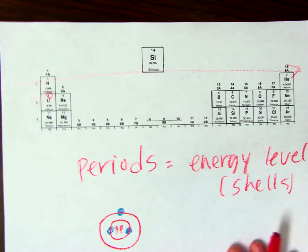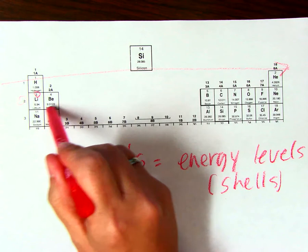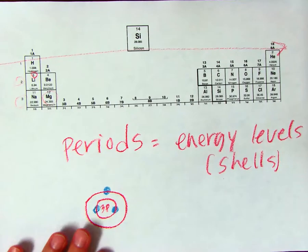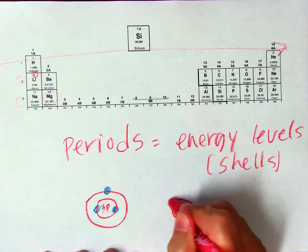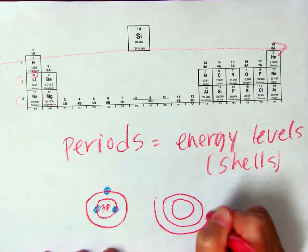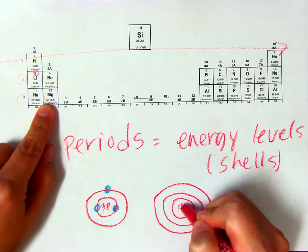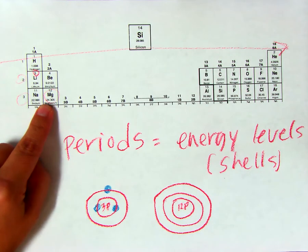We could look at magnesium. Magnesium is at level three. So, it's one, two, three. Twelve protons. And so, there should be twelve electrons.